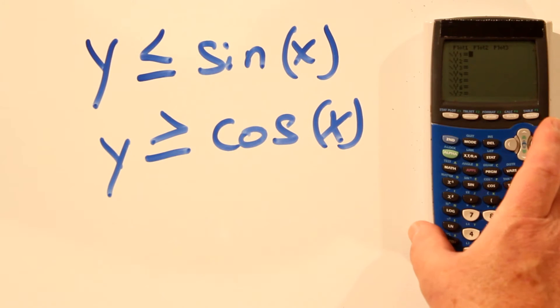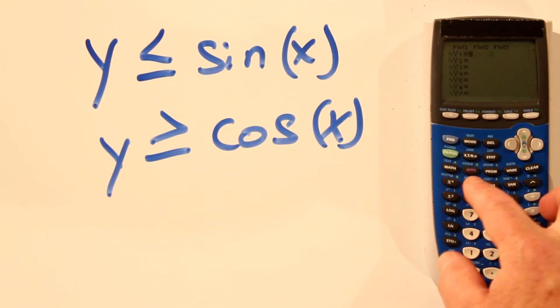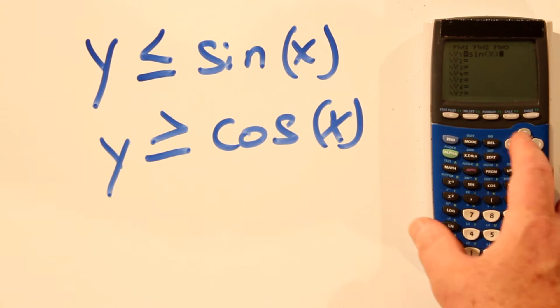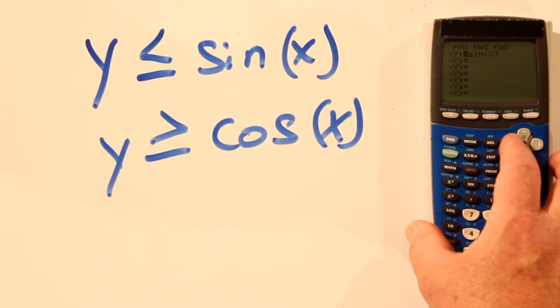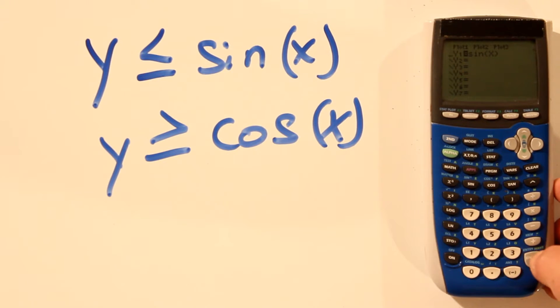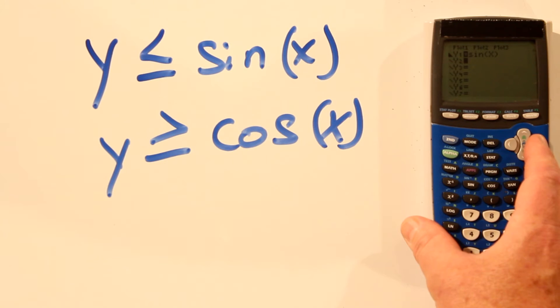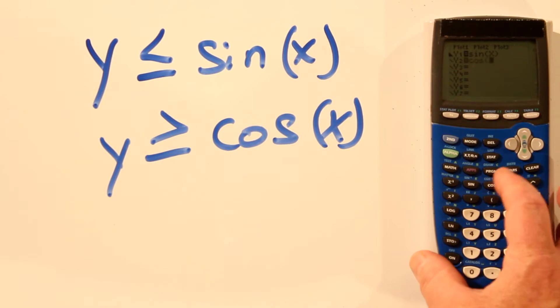And now we'll enter our equations. Y equals sine x, close parenthesis. And we want less than or equal. So we'll hit enter 3 times over there. And then we want y greater than or equal to cos x.